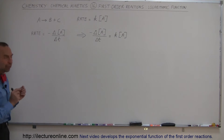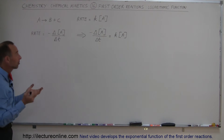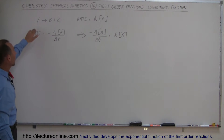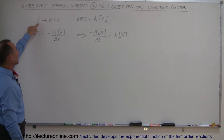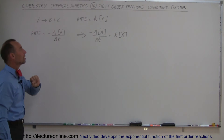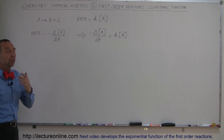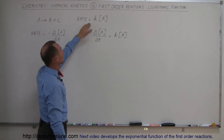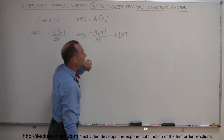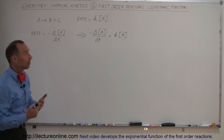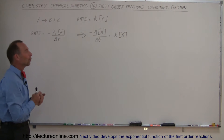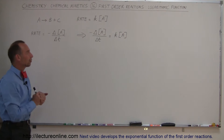Let's start with a simple first-order reaction — a decomposition reaction where reactant A decomposes into products B and C. We can write that the rate is equal to the rate constant K times the concentration of A, and since we're dealing with first-order reactions, the order of A is first-order.